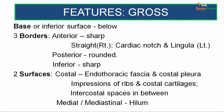The surfaces are two: the costal surface, which is covered by the pleura and separated from the lateral thoracic wall by the endothoracic fascia — it is more or less smooth but bears impressions of the ribs, costal cartilages, and alternating elevations of the intercostal spaces. The medial or mediastinal surface is specific, bearing impressions of many structures, and is different on the right and left sides.